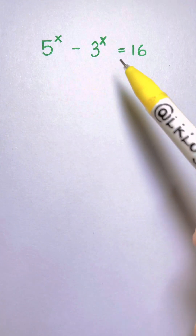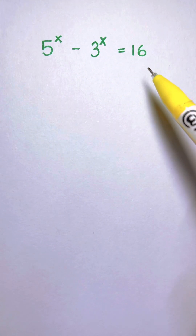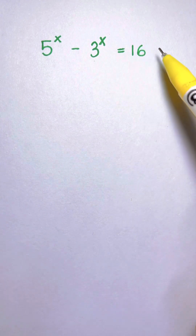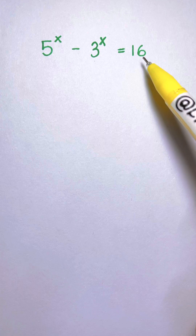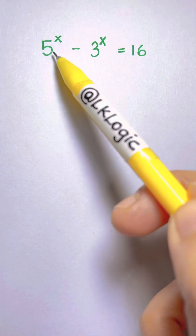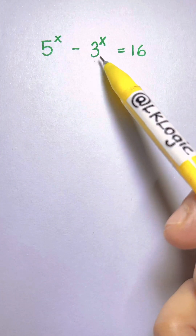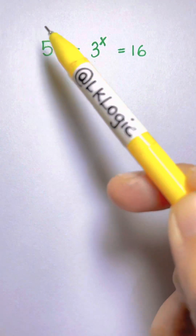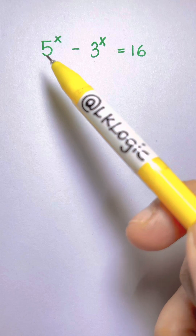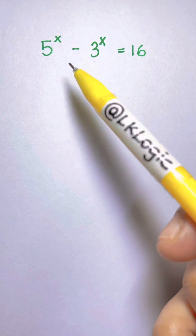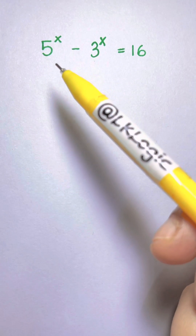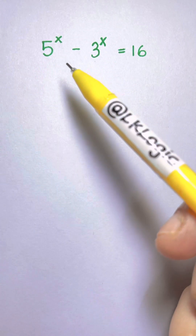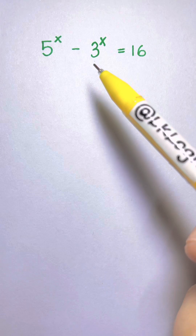In this video we are going to solve a nice exponential equation. We have 5 to the power of x minus 3 to the power of x equals 16. At this point most of you might have figured out what the answer is, but is that the only answer, or are there any other solutions?